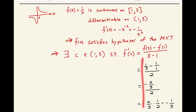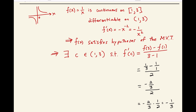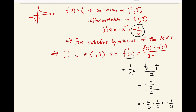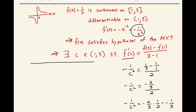So the slope of the secant line is negative 1/3. There must exist c such that the derivative at c is equal to negative 1/3. We calculated that f prime of c is negative 1 over c squared. So we have to find c such that negative 1 over c squared is equal to negative 1/3 — that's the equation we need to solve.